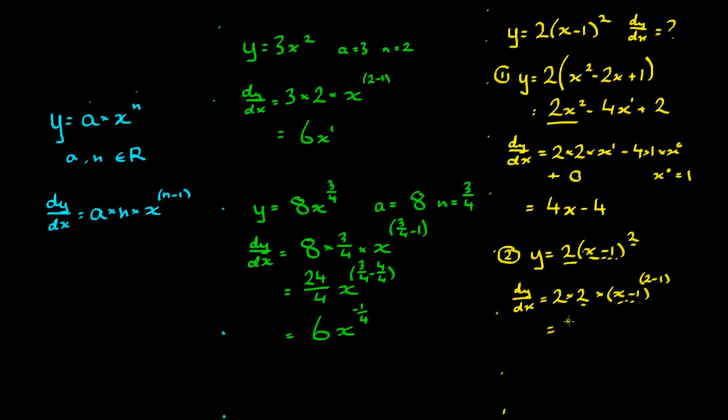So this simplifies down to 4 times x minus 1 to the power of 1 which is 4x minus 4. So ultimately we come out with the same solution as the solution we had using method 1 but in method 2 we did not have to expand that polynomial.